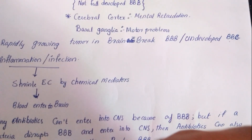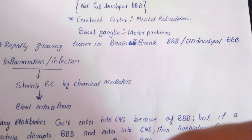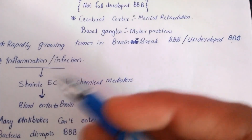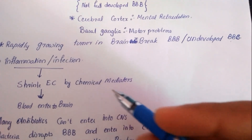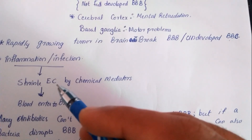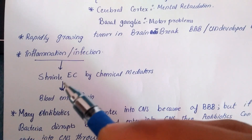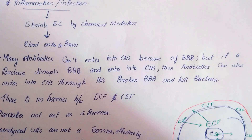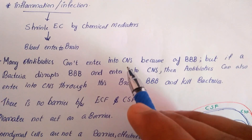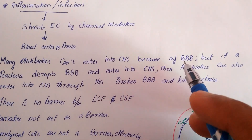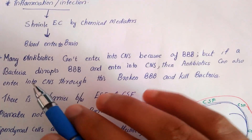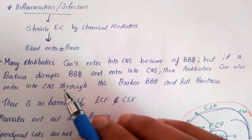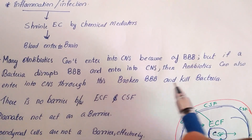Inflammation or infection is another cause. During inflammation or infection, the body releases chemical mediators that can cause the endothelial cells to shrink, creating a gap so blood can enter the brain. There is actually a benefit here: many antibiotics cannot normally enter the central nervous system due to the blood-brain barrier, but if bacteria disrupt the blood-brain barrier and enter the CNS, antibiotics can also enter through this broken barrier and kill the bacteria.